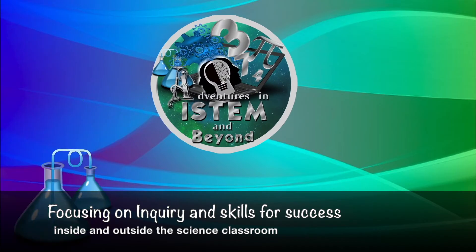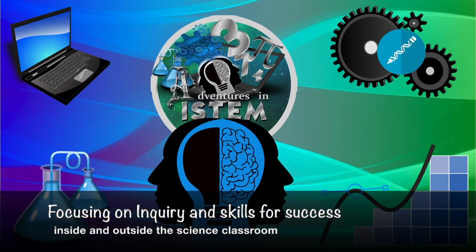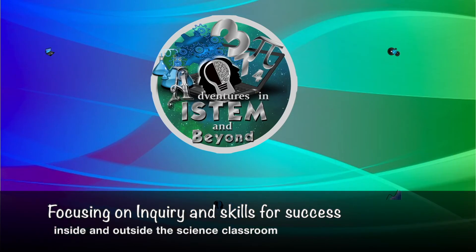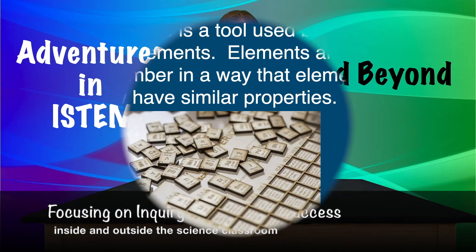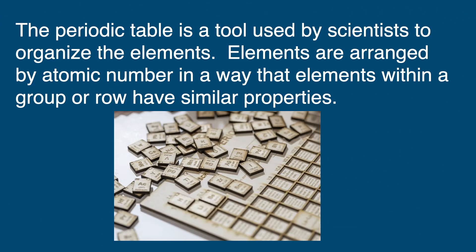The periodic table. The periodic table is a tool used by scientists to organize the elements. Elements are arranged by atomic number in a way that elements within a group or row have similar properties.